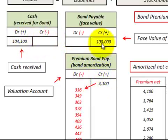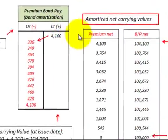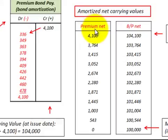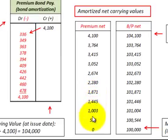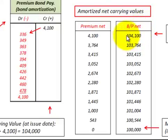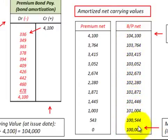Looking at our carrying values: at the issue date we had the $4,100 premium and the bond payable carrying amount was $104,000. As time moves on, we keep reducing the premium each period. So at the end, when the bond payable is due, we have a premium of zero, and our bond payable net amount is also reduced — we start at $104,000 and at maturity in five years we're down to $100,000.